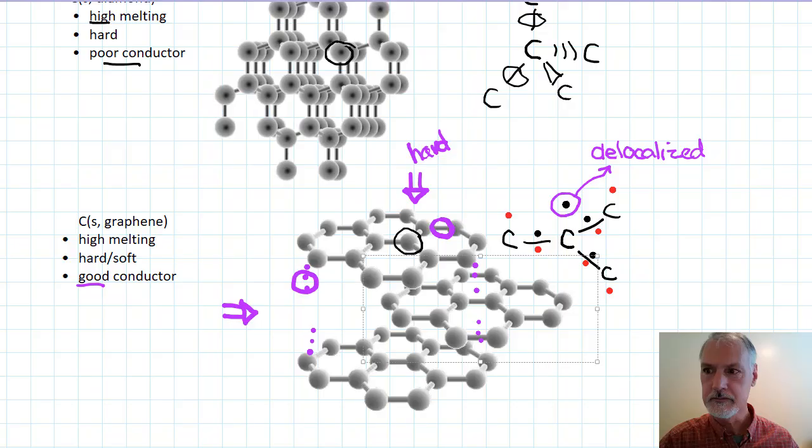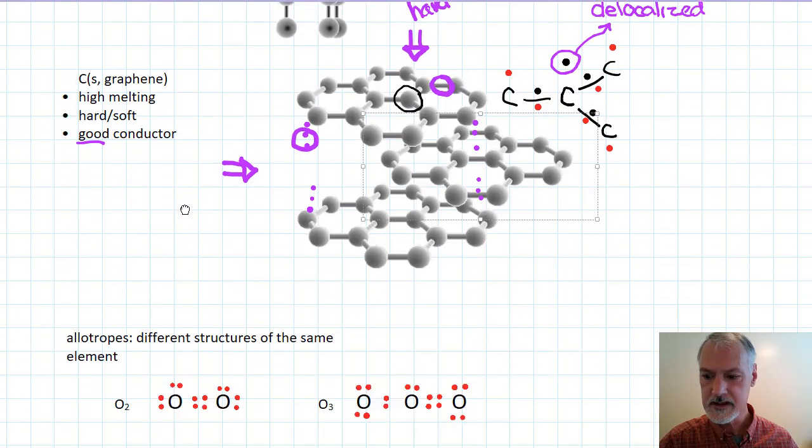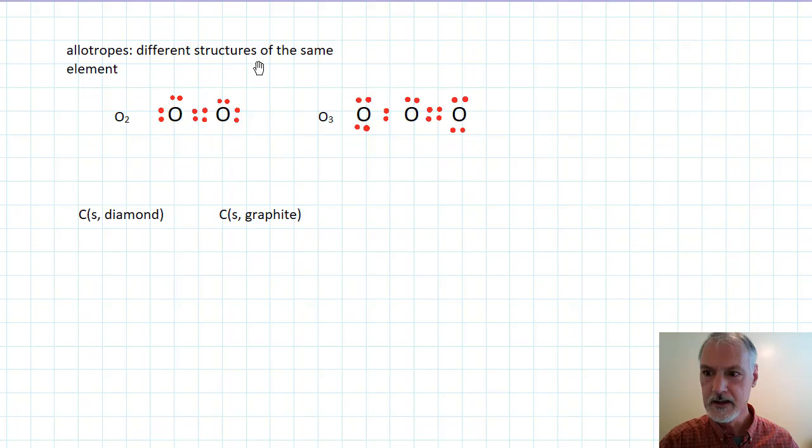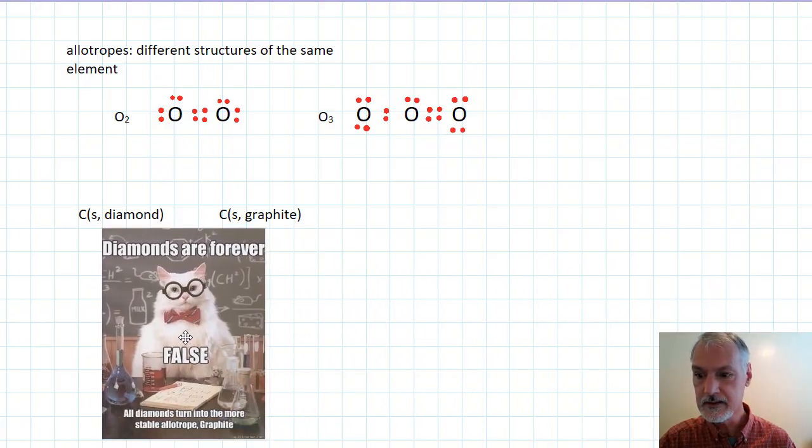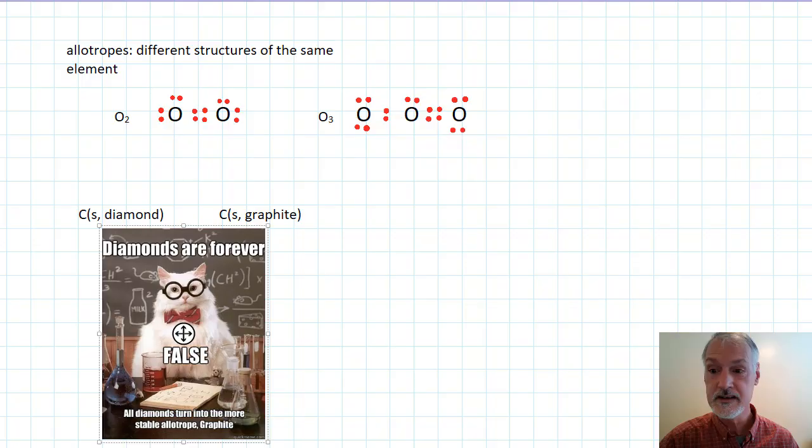While we're on this topic of network solids, I'd like to also take a look at something that are called allotropes for a moment. Different structures of the same element. Oxygen, for example, can form O2 or O3. These are considered allotropes because they're made of the same element, oxygen. Diamond and graphite are also considered to be allotropes of the element carbon because that's the building block, carbon atoms. An interesting point about these carbon atoms is that diamond will essentially all end up as graphite in the future as that's a more stable form.